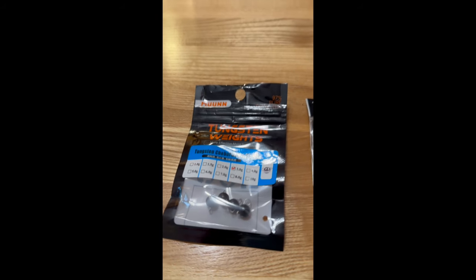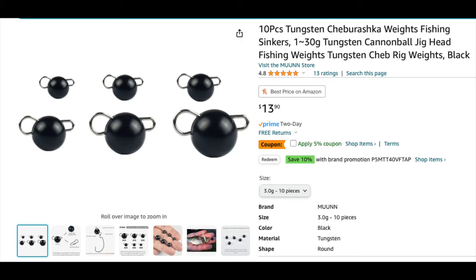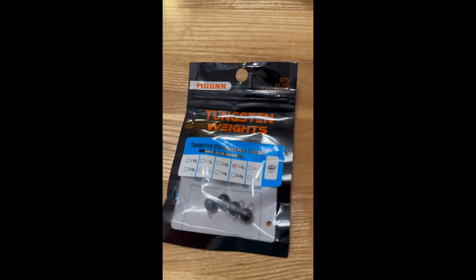These things are called Cheb Regs, Cheb Weights. You can see the full name there. I'm not even trying to pronounce it. They come in different weights. I'm using three gram, which may be slightly heavy. It's about an eighth of an ounce. One and a half might be better, but these work pretty well for me.